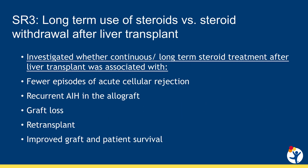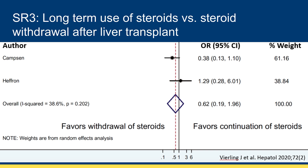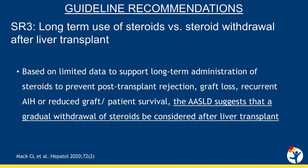The final systematic review addressed the question of whether or not the long-term use of steroids after liver transplant was associated with improved outcomes compared to weaning off of steroids. Many centers keep patients on steroids indefinitely after transplant with the thought that it may decrease rejection or the recurrence of autoimmune hepatitis, as well as improve graft and patient survival. The systematic review revealed no significant difference between the steroid management strategies after liver transplant for autoimmune hepatitis, with similar outcomes whether or not the patient was maintained on steroids long-term. Therefore, the AASLD suggests that a gradual withdrawal of steroids be considered after liver transplant.